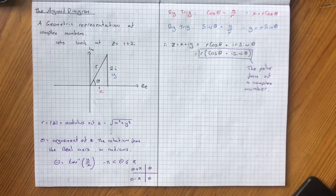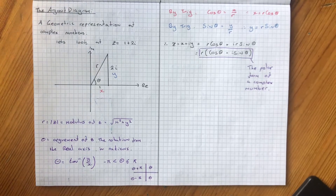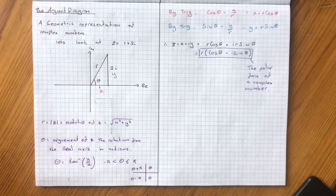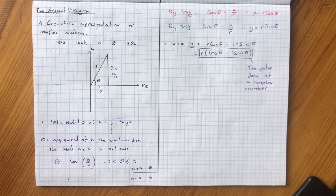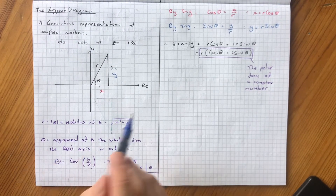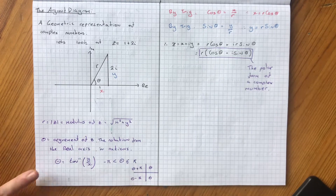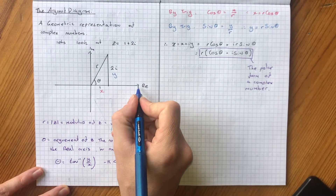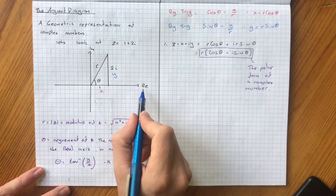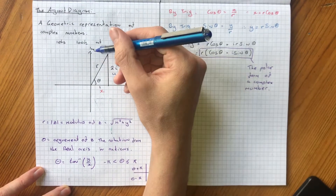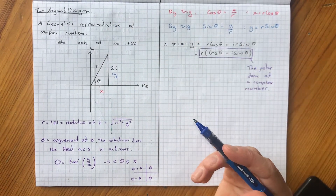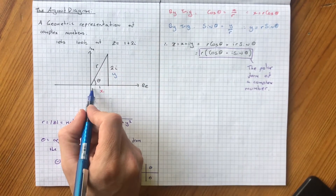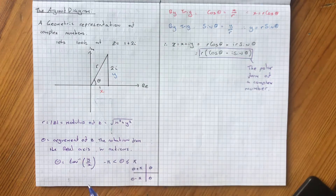In this video we're going to look at the Argand diagram, which is a geometric representation of complex numbers. If we look at the example of z equals 1 plus 2i, you can see an Argand diagram looks very similar to a Cartesian diagram or coordinate axis, except instead of an x-axis and a y-axis we've got the real axis and the imaginary axis, which allows us to plot complex numbers such as 1 plus 2i, where 1 is the real and 2i is the imaginary part.